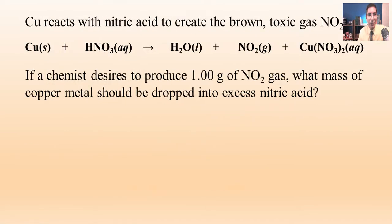Let's try an example. We're going to have copper reacting with nitric acid to produce a brown toxic gas, and that gas is nitrogen dioxide, NO2. So here's the reaction for that. Copper reacts with nitric acid to make some water and some NO2, and then this blue copper(II) nitrate.